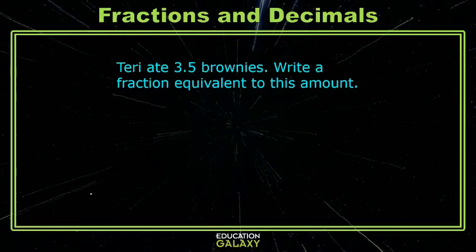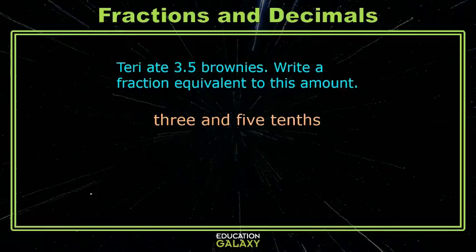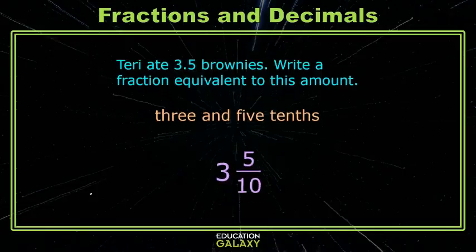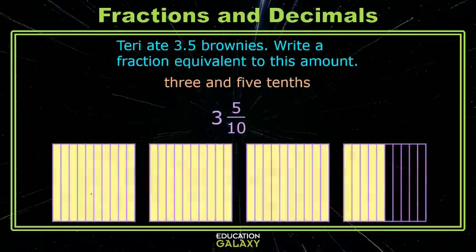Let's look at one more. Terry ate three and five-tenths brownies. If we want to write that as a fraction, let's think about how we say it. Three and five-tenths. We know that mixed number, three and five-tenths. And as a visual, let's look at that on our grids.